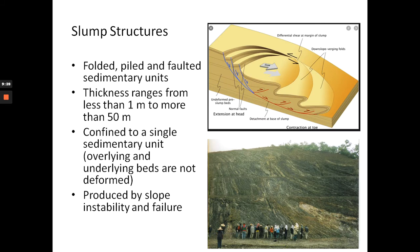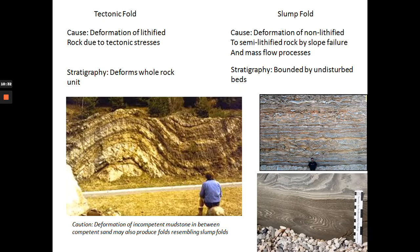At a larger scale you get slump structures: folded, piled, and faulted sedimentary units with associated faults and folds. Thickness varies from less than one meter to more than 50 meters. Like convoluted lamination, they are intraformational — the overlying and underlying beds are not deformed. Slumps are produced by mass failure: slope instability results in failure of the slope, leading to faulting and folding of the layers. You need a slope and soft, unlithified sediment.